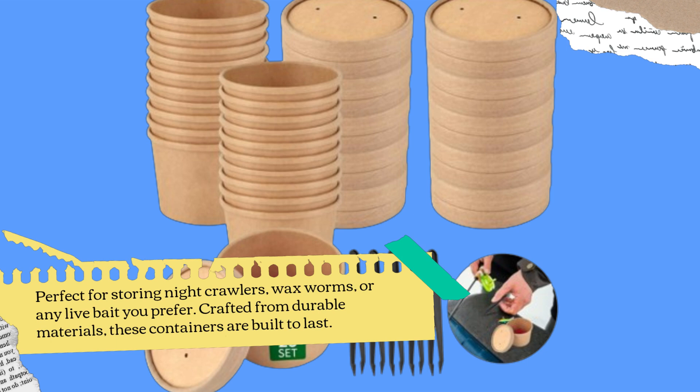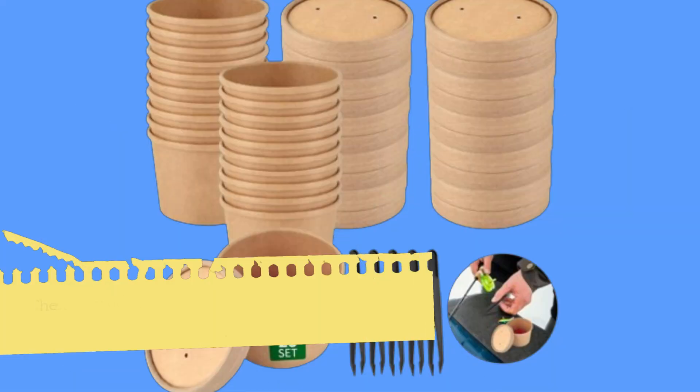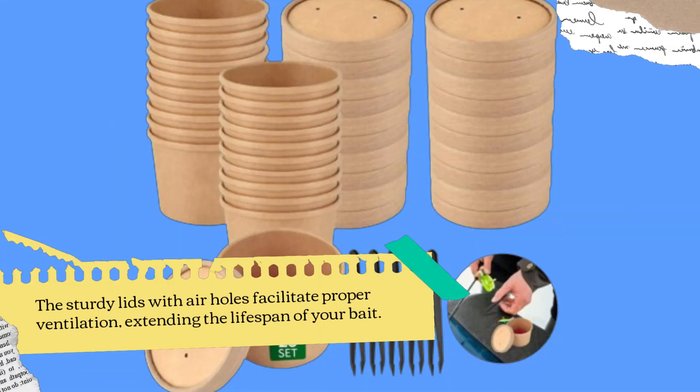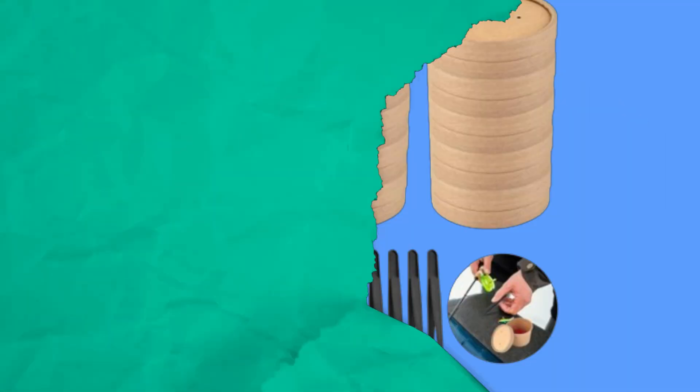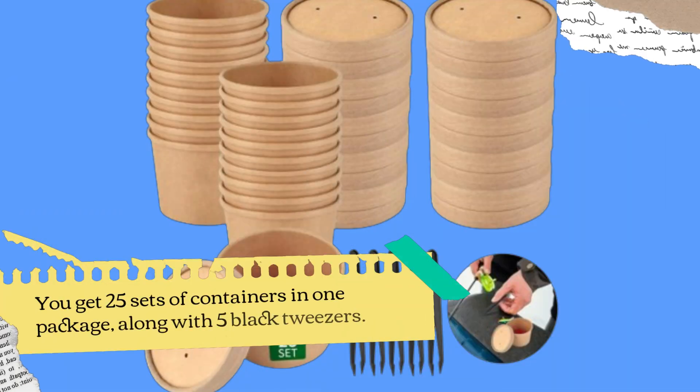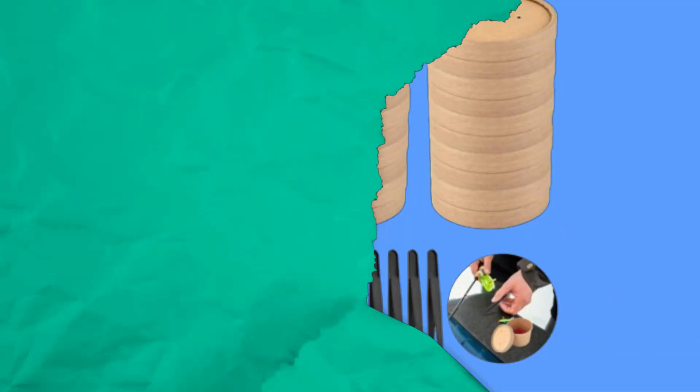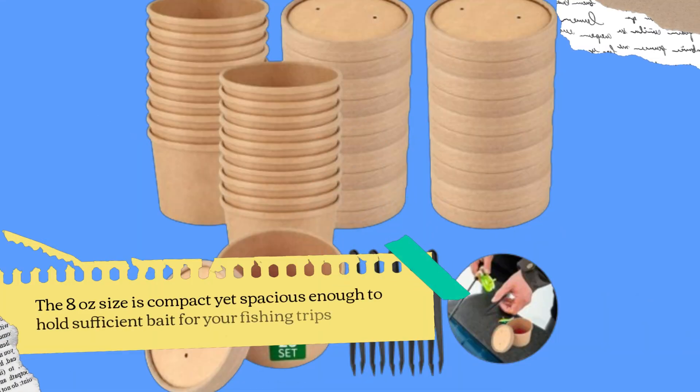Crafted from durable materials, these containers are built to last. The sturdy lids with air holes facilitate proper ventilation, extending the lifespan of your bait. You get 25 sets of containers in one package, along with 5 black tweezers. The 8 ounce size is compact yet spacious enough to hold sufficient bait for your fishing trips.